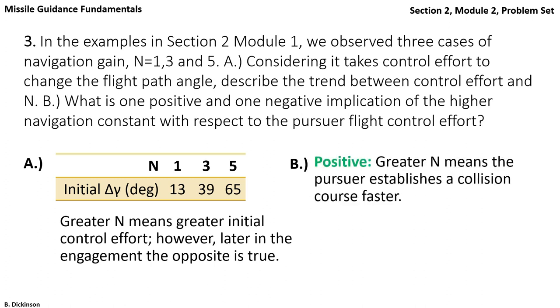One positive thing about increasing N is that we get on a collision course faster. If we're on a collision course faster, then it's easier to correct for deviations to that collision course.